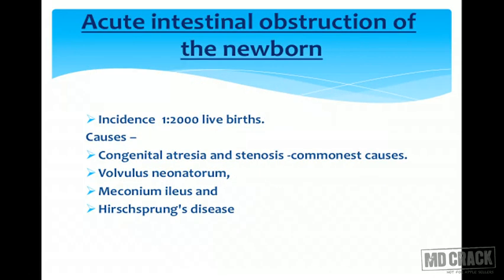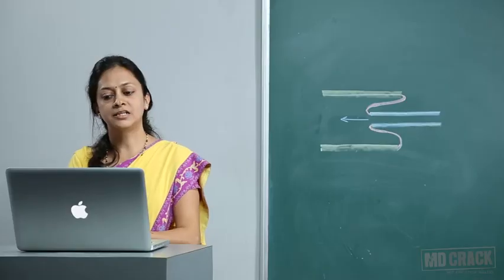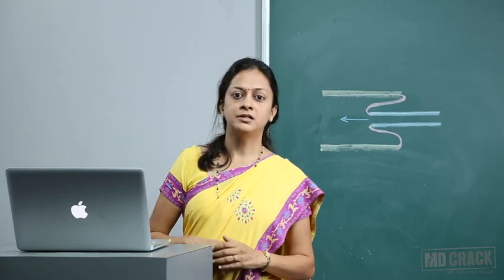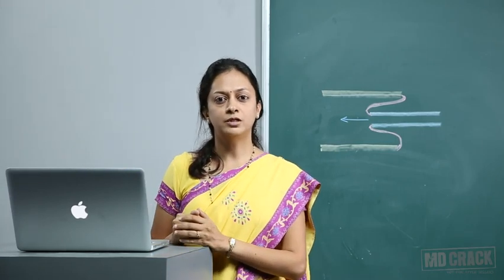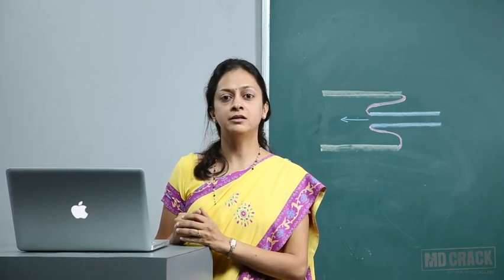Acute intestinal obstruction of the newborn has an incidence of 1 in 2,000 live births. Causes include congenital atresia and stenosis, volvulus neonatorum, meconium ileus, and Hirschsprung's disease. Congenital atresia varies depending on anatomical site, starting from the duodenum, which is the commonest site for intestinal atresia.